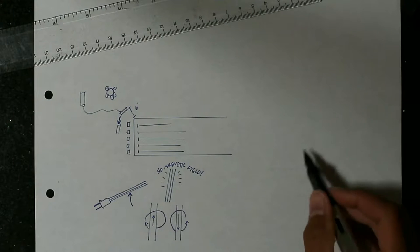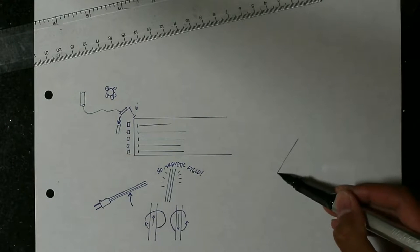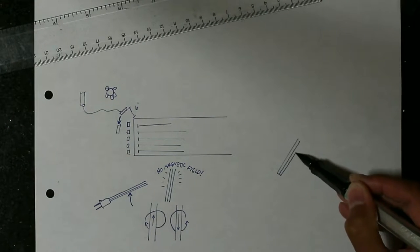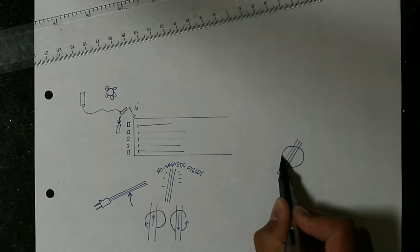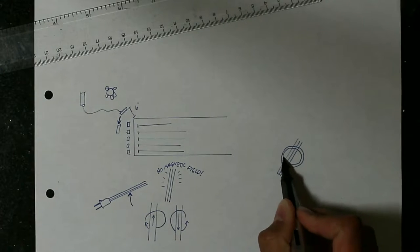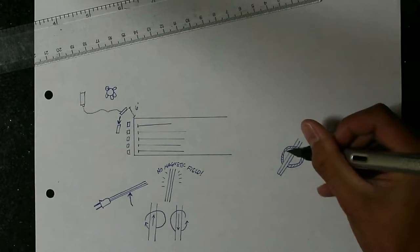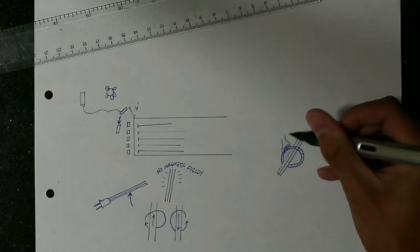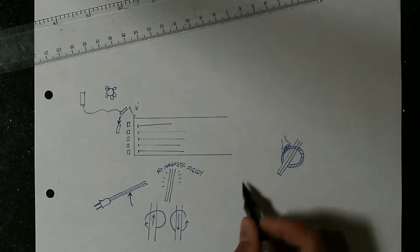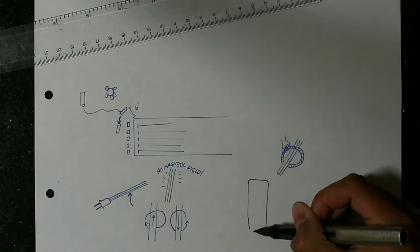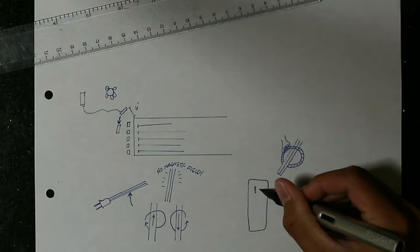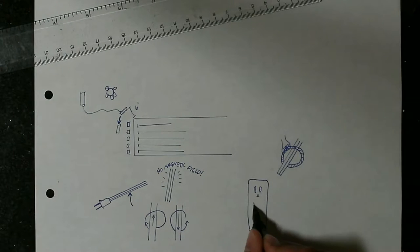Now in a ground fault interrupt circuit, which is that little box that you see in bathrooms and things like that, they take advantage of this property. They have a loop of wire that goes around these two. Now technically, if something is plugged in, since it's all part of the same circuit, there should be the same amount of current going through one as there is through the other.